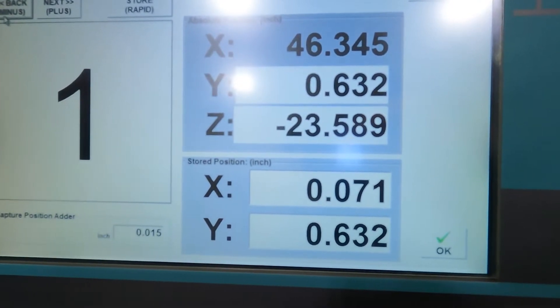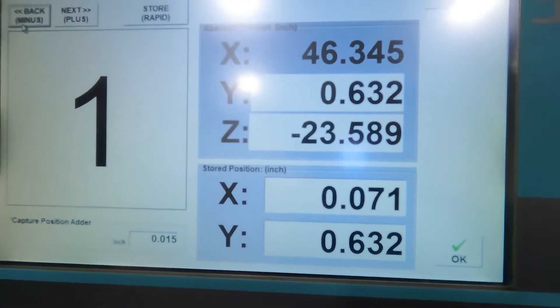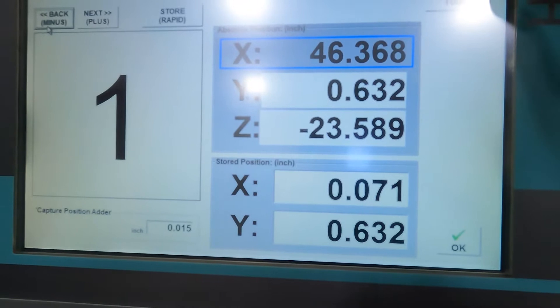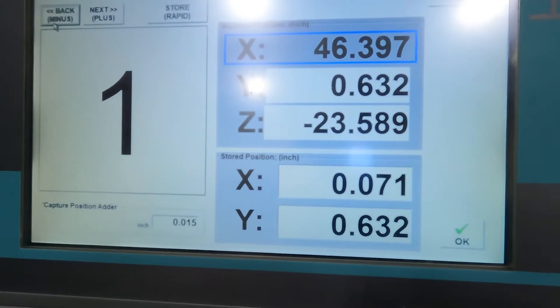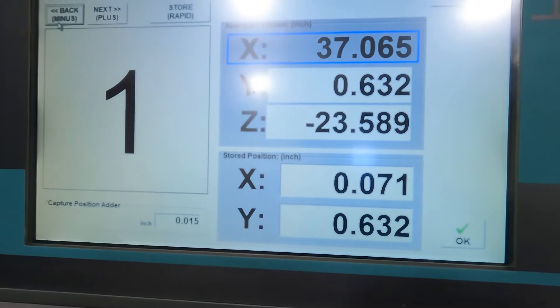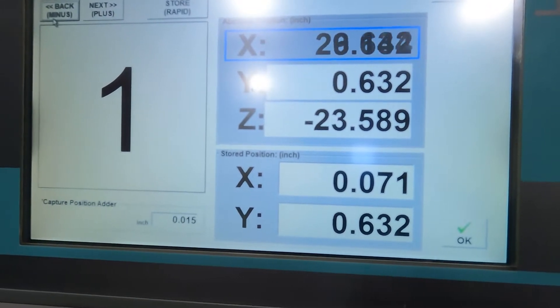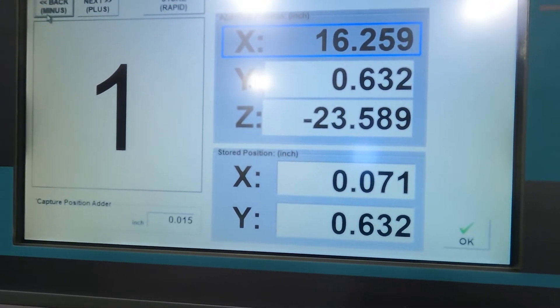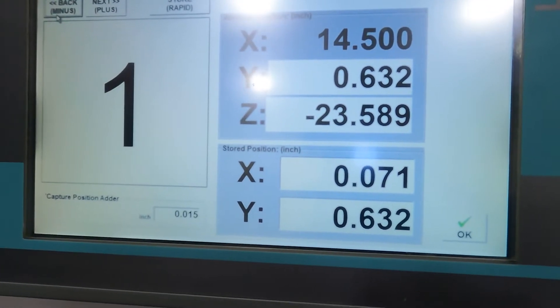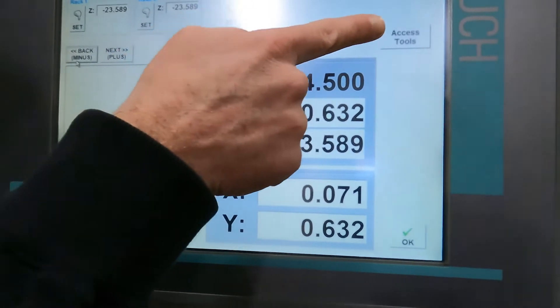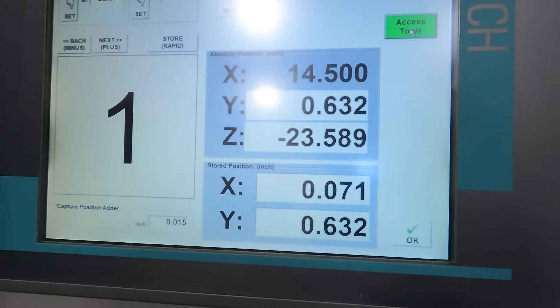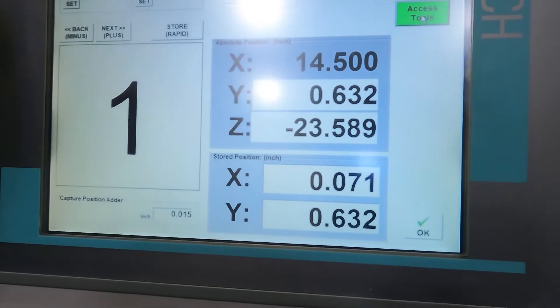Now that my Z-axis matches, I can just drive my X all the way over. It will stop before it gets into the tool rack area. Right there at 14 and a half it stopped. I need to select Access Tools so I can get into the tool rack area and access the tool locations.